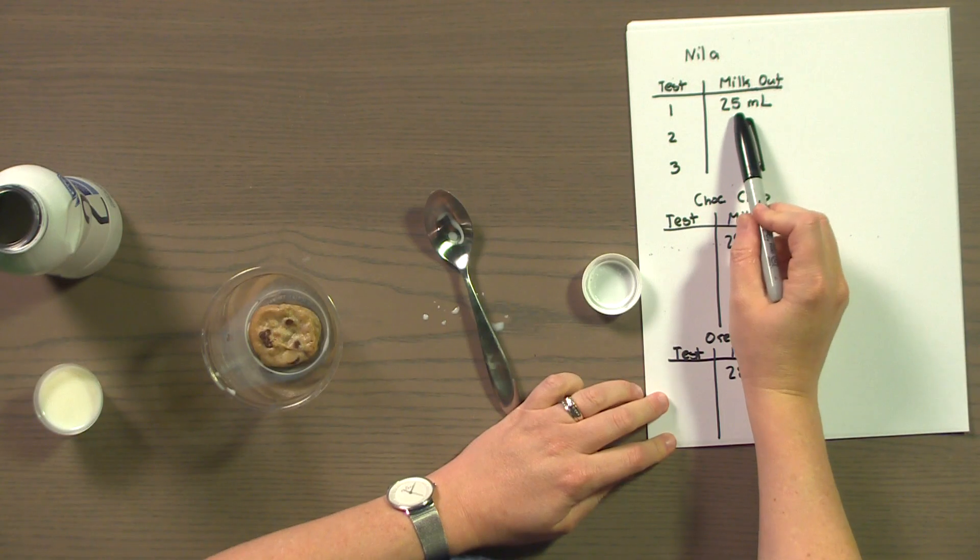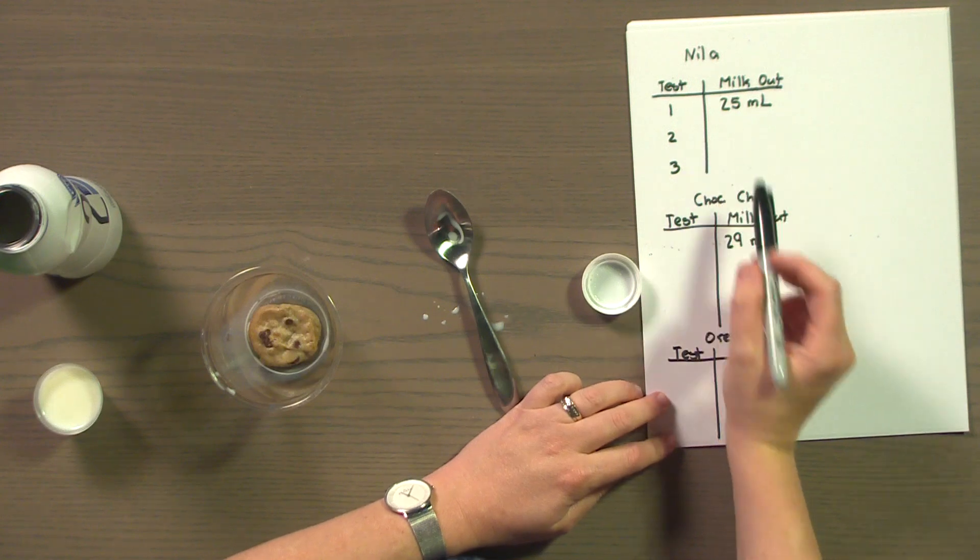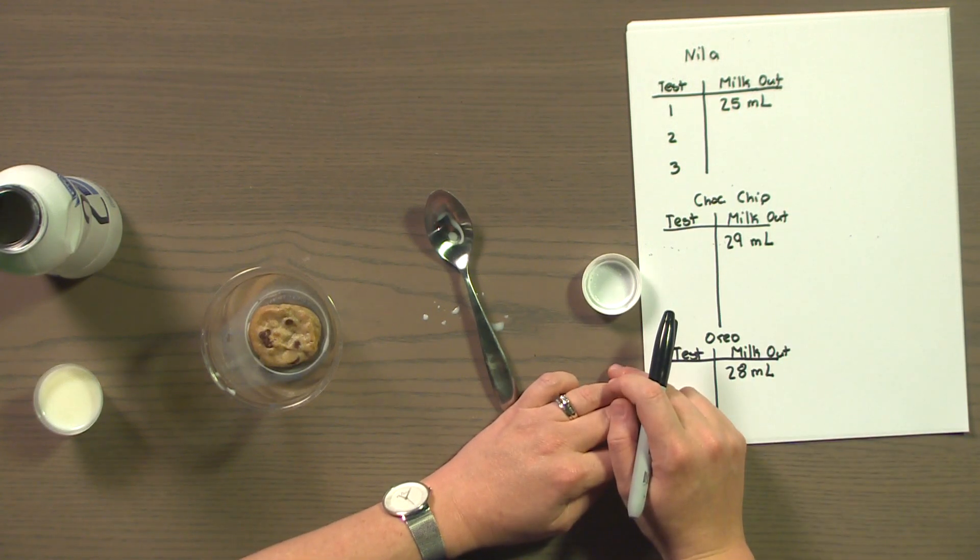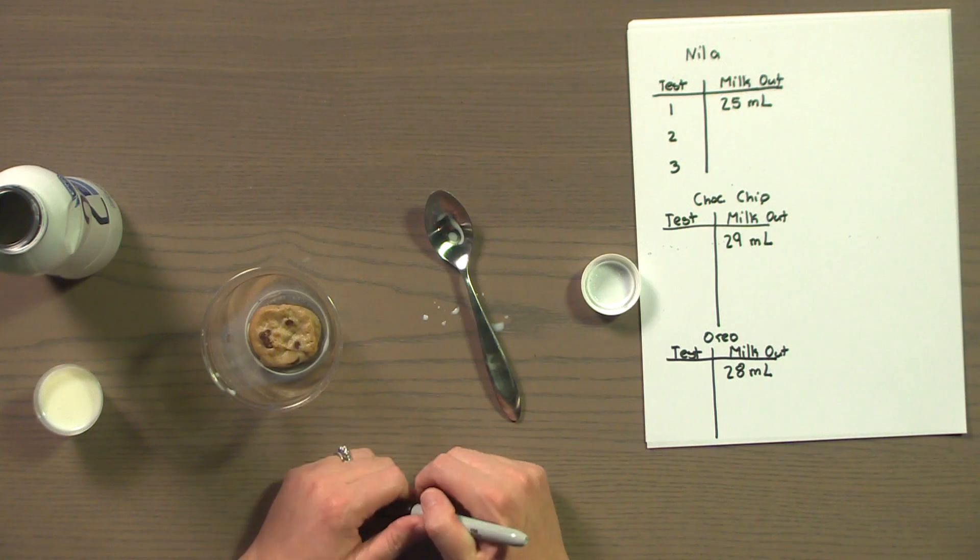So now I have all my recorded data for those tests that I've done. 25 milliliters came out of vanilla, 29 milliliters came out of the chocolate chip, and 28 milliliters came out of the Oreo. So, are we done with the test? Raise your hand if you think we still have more to do before we know for sure which cookie soaks up the most milk. Right. We still need to test each cookie two more times. That way we can make sure our results are accurate. Now, through the magic of television, we're going to fast forward to the end of the fair test.